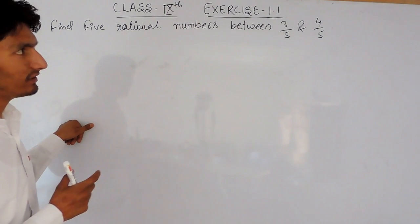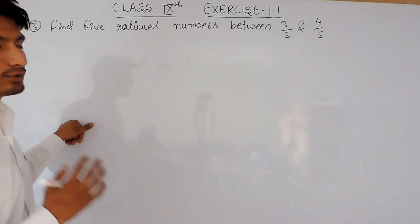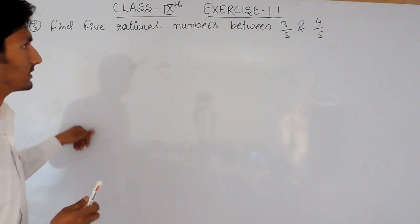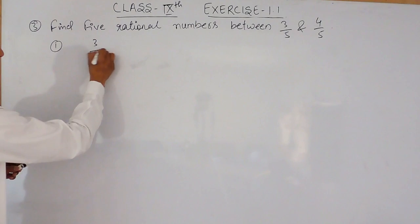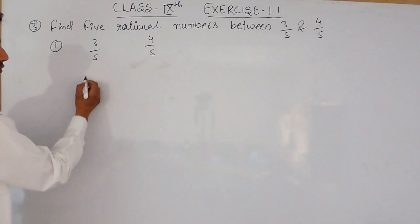As I have already discussed in the previous video, if you want to find rational numbers between any two numbers, there are two methods of finding those rational numbers. The first method is to first add these two numbers and then divide by 2.